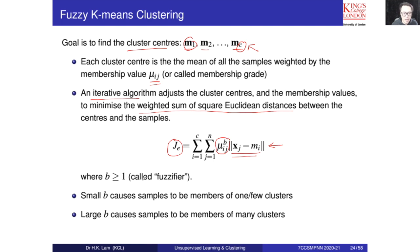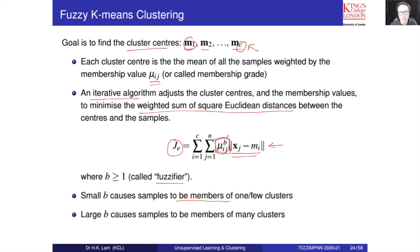The fuzzifier B must be greater than or equal to 1. If we choose a very small value of B, closer to 1, we diminish the fuzzy effect, causing each sample to be a member of fewer clusters. If we increase the value of B, the overall value becomes larger, meaning there is a greater chance that sample XJ will belong to more than one cluster. A value close to zero means it belongs to that cluster.